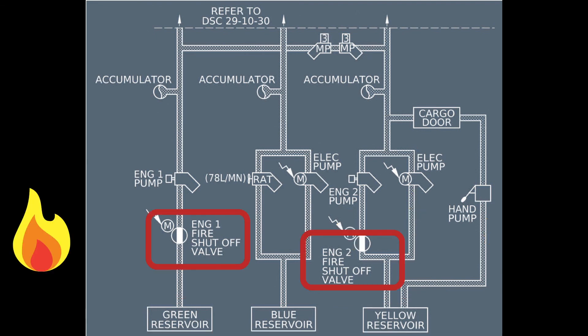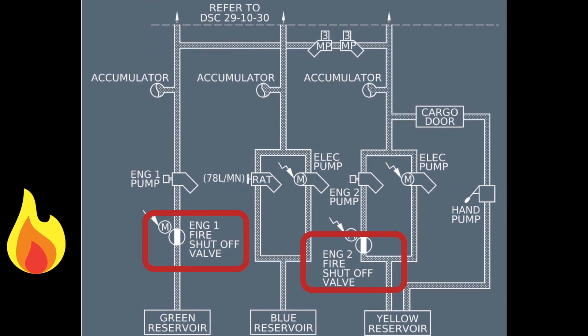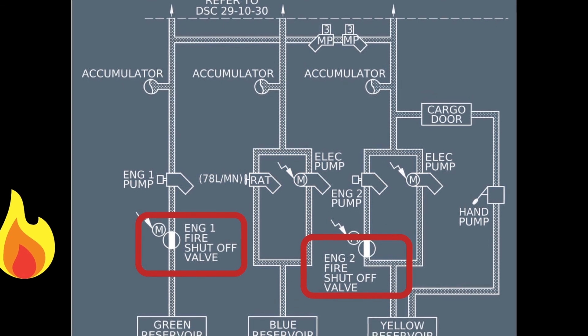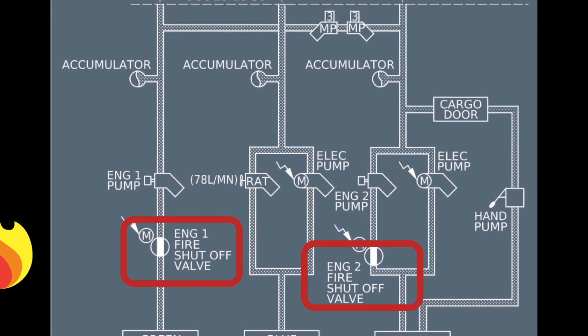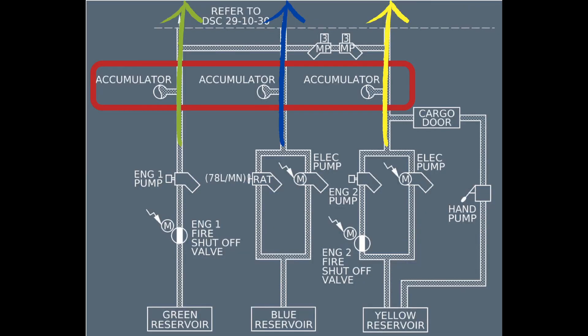The two engine pumps are preceded by engine fire shut-off valves. When the engine 1 or engine 2 fire shut-off handle is pushed, the valve closes the respective hydraulic line. Each hydraulic system also has its own accumulator. An accumulator provides constant pressure in the system by covering transient demands during normal operation. You can also see the PTU in this design architecture.